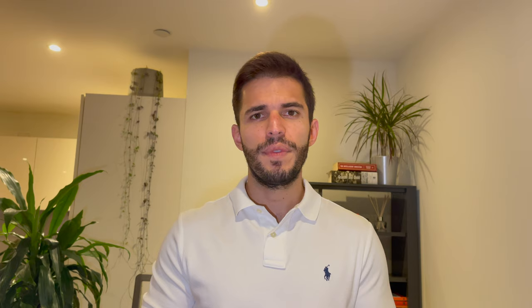Building on that logic, here we have the table with different bond yield percentages. For a PE of 13.3, the corresponding bond yield is 7.5%. For a PE of 20, the bond yield would be 5%. And for a PE of 40, the bond yield would be 2.5%, and so on.